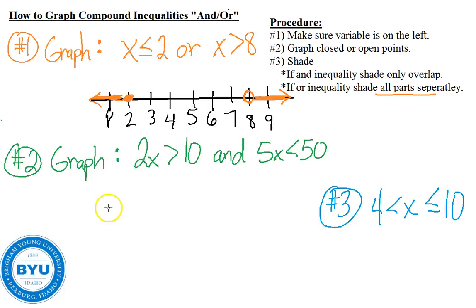Let's graph number two. For number two, we're going to graph ourselves a number line. Oh, this is interesting. The variable's on the left, but it's not by itself. We're going to need to take care of that first. I'm going to go ahead and divide each of these by two. So divide by two. So I get X is greater than five. Divide this by five and I get X is less than 10. And it's an and inequality. Ooh, those shade inside.